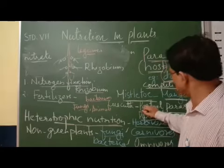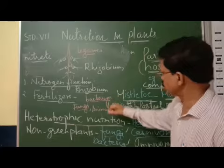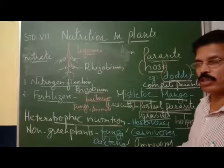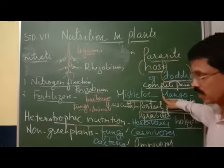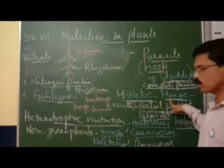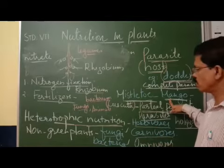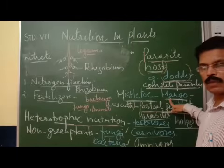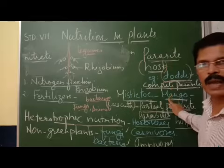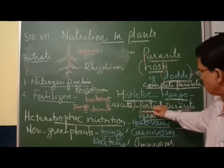Now, partial parasites — like mistletoe or Cuscuta — are called partial parasites because they get water and minerals from the host plant, which is the mango tree. By using this water and minerals, mistletoe or Cuscuta synthesizes food on its own. So they are called partial parasites, because they get water and minerals from the host but then synthesize their own food through photosynthesis.